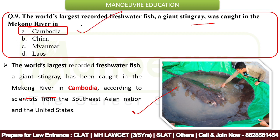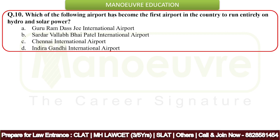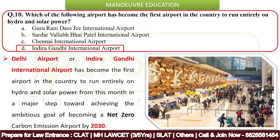Next question: which airport has become the first airport in the country to run entirely on hydro and solar power? The correct answer is Indira Gandhi International Airport, Delhi. Delhi's Indira Gandhi International Airport has become the first airport in the country to run entirely on hydro and solar power, in a major step towards achieving the goal of becoming net zero.